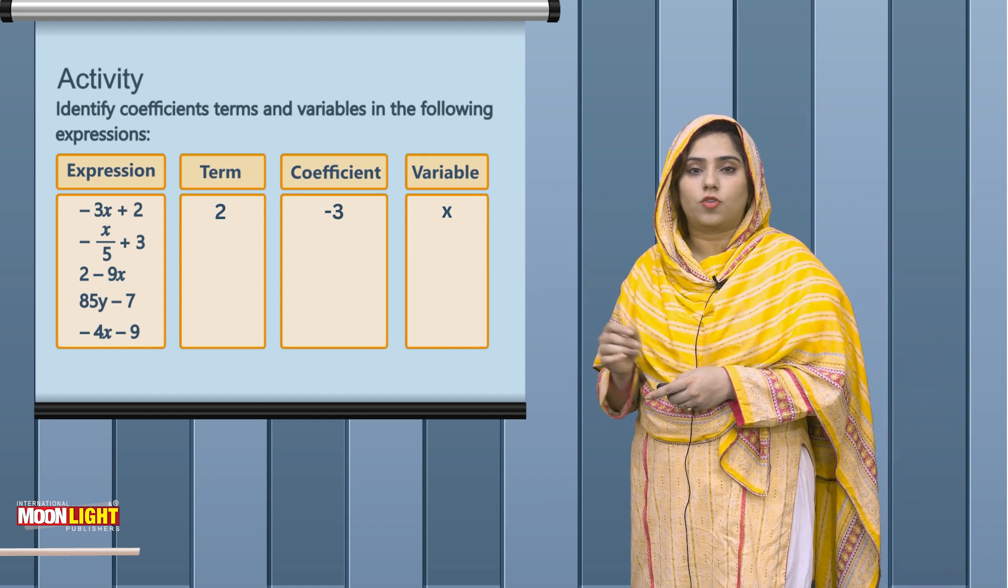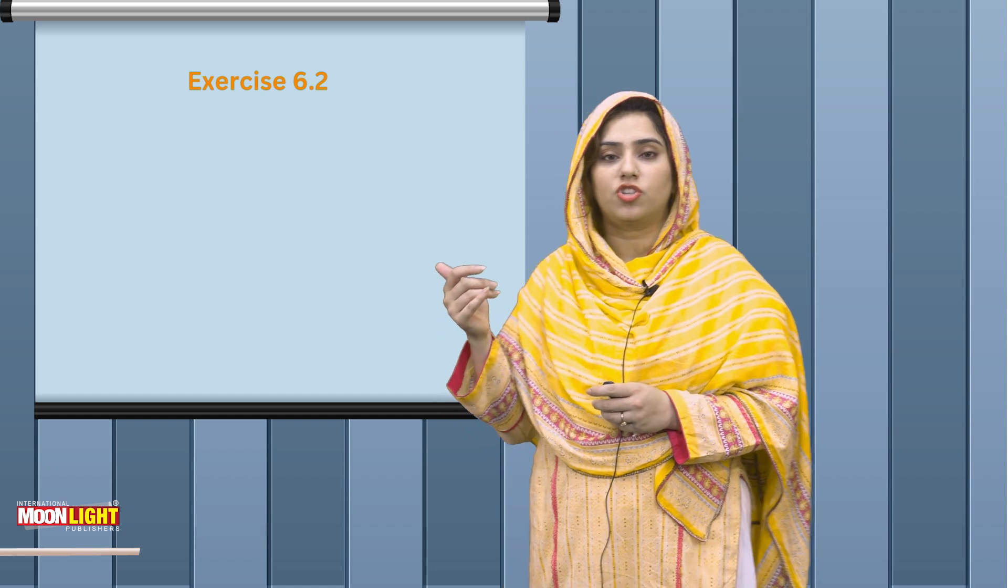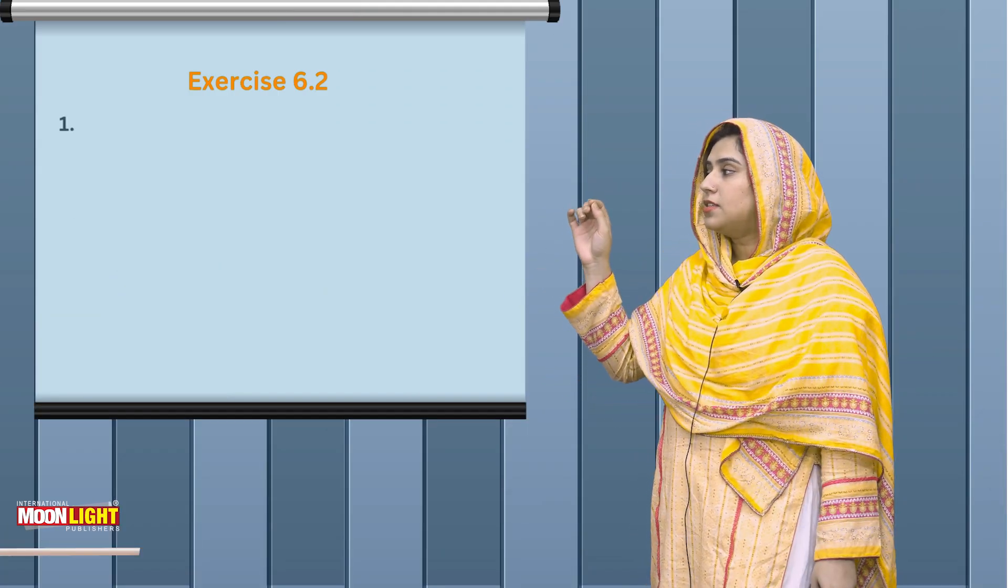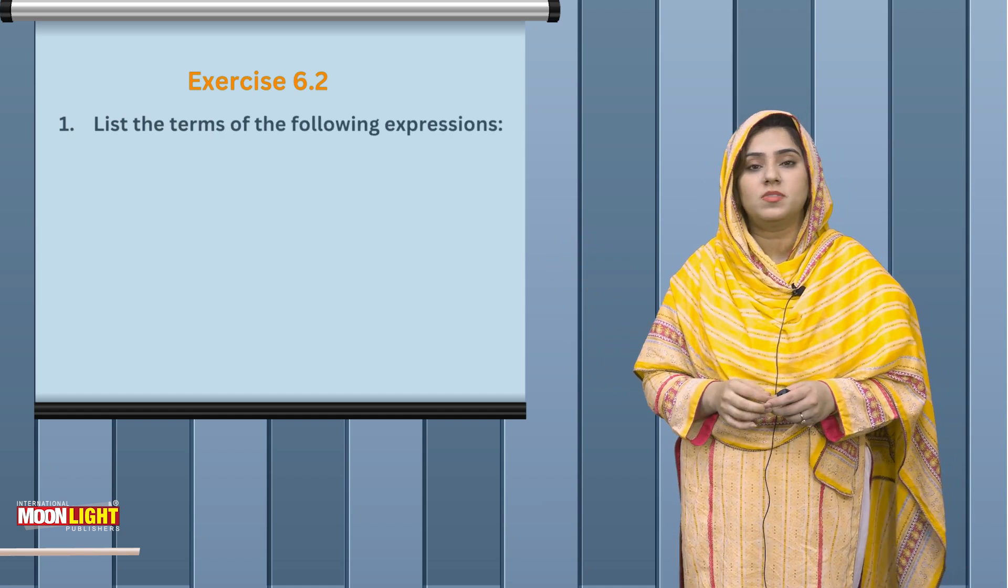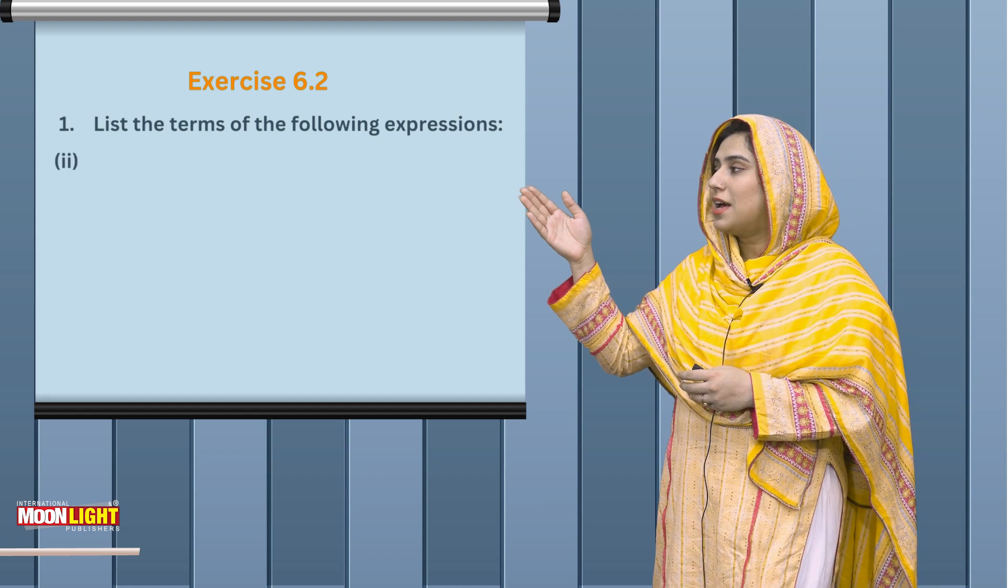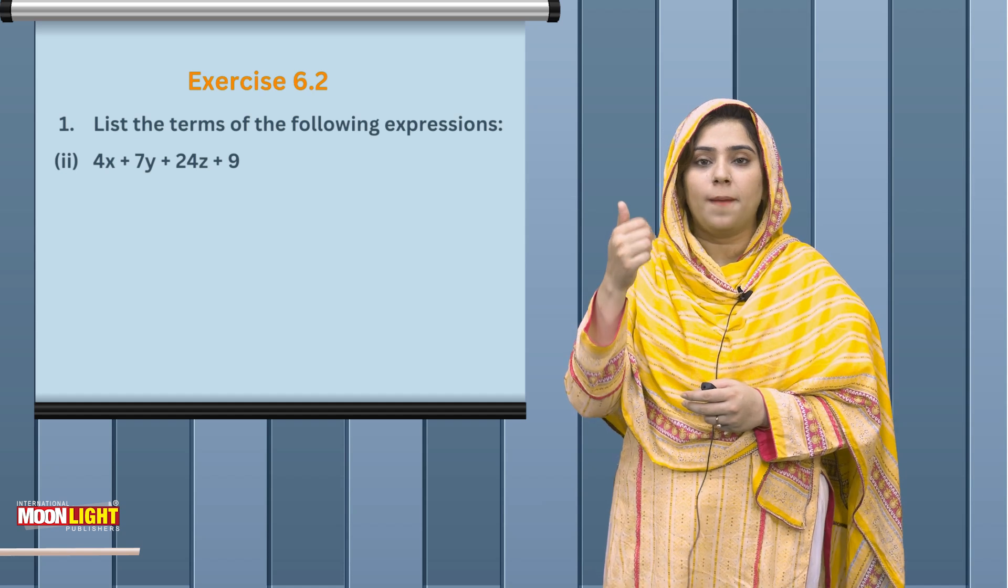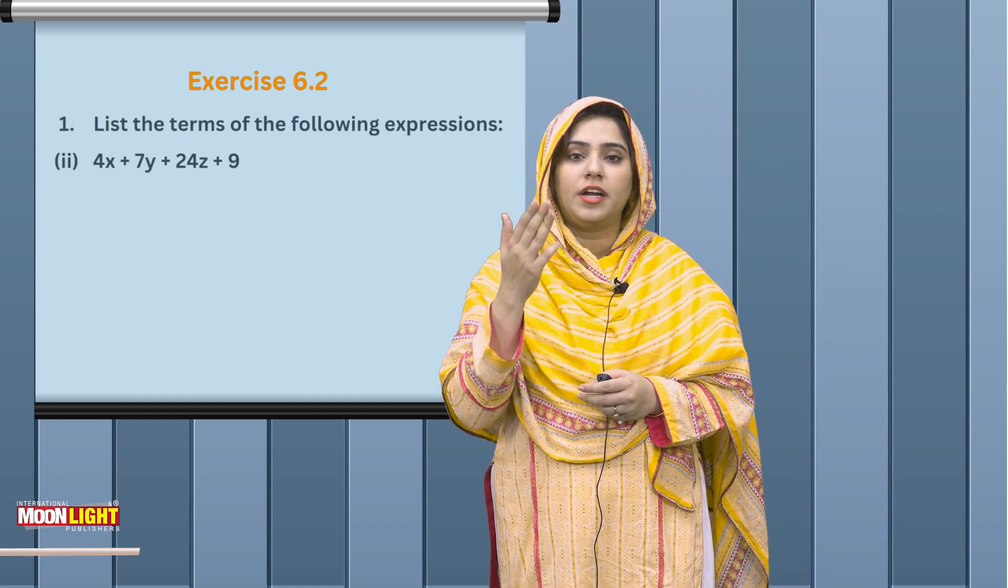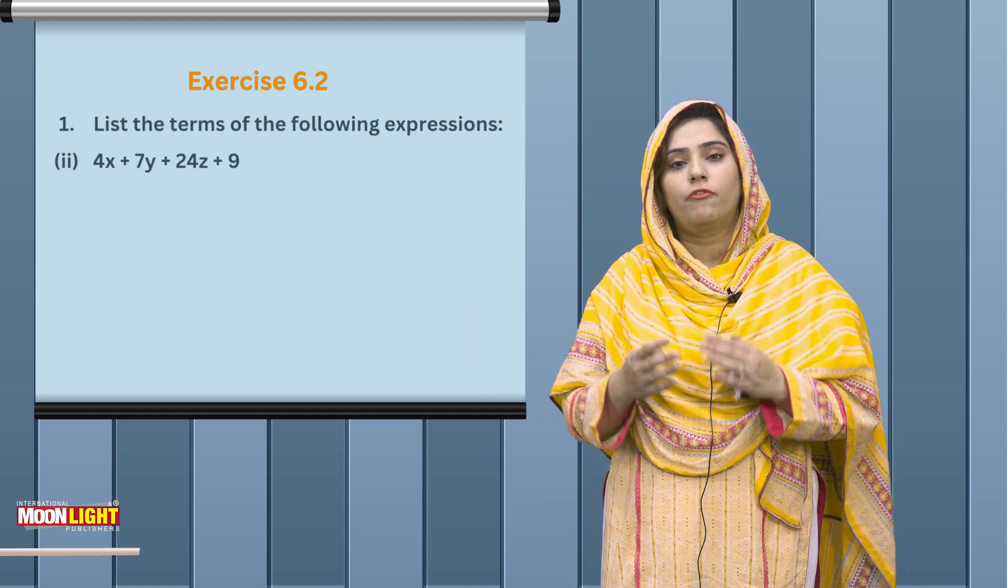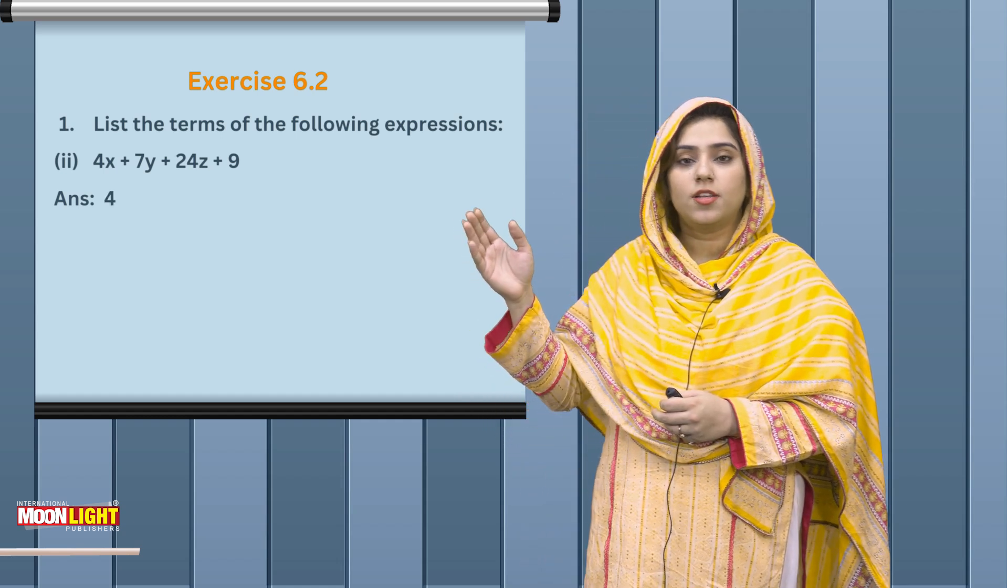Now students, come to exercise number 6.2. If we talk about question number 1, you have to list the terms of the following expressions. For example, 4x plus 7y plus 24t plus 9. Answer: there are four terms used.